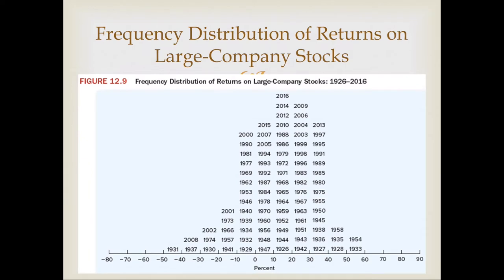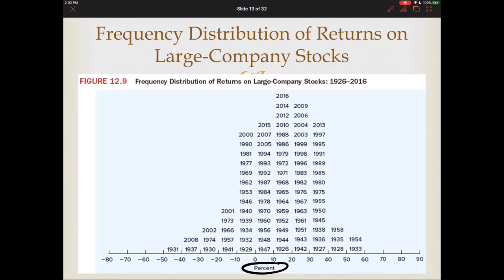Looking at a frequency distribution of returns for large company stocks, years have been placed within the appropriate percentage range on a histogram. You can see the majority of returns occurred between 10 and 20 percent — the highest number of years of returns fell in this range. We will come back to these frequency distribution charts shortly.